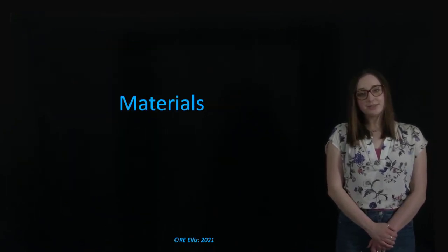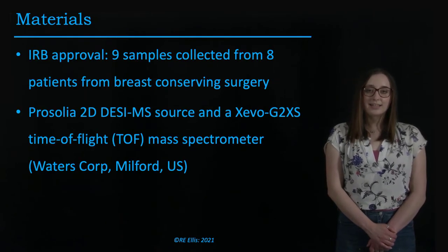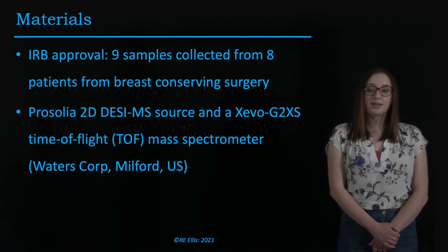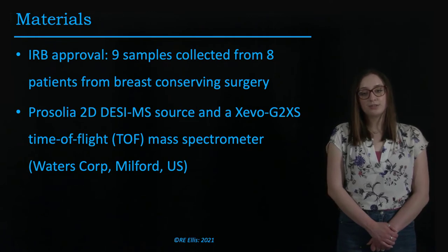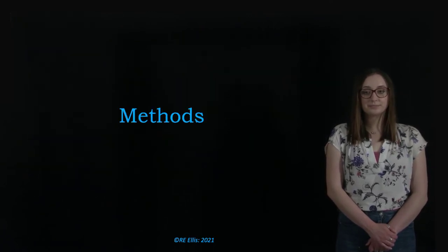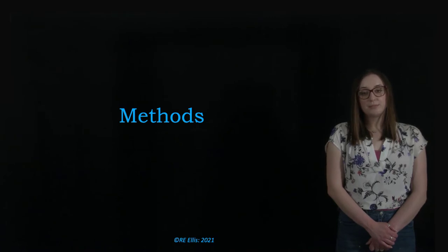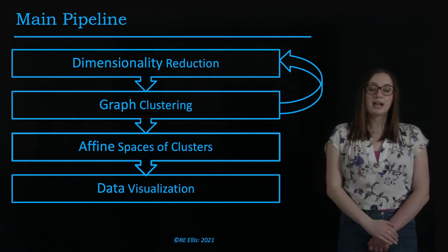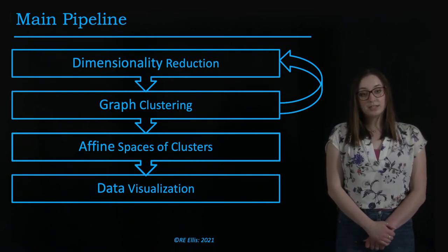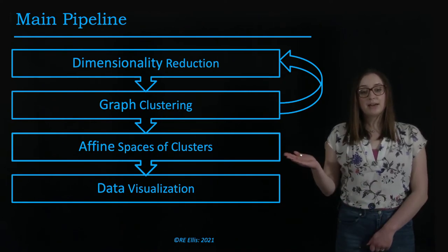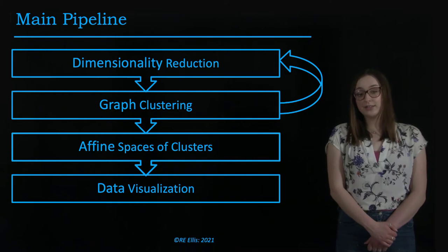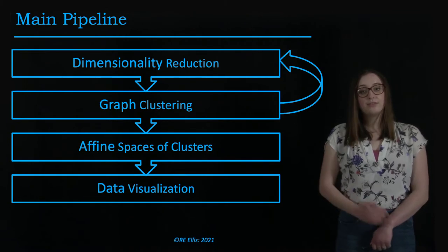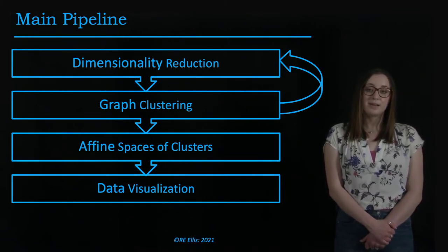We had access to nine tissue samples collected during a breast conserving surgery that were flash frozen and processed using the Priscilla 2D DESI mass spectrometry source and a time-of-flight mass spectrometer. The methodology will be multi-part. We will walk through a pipeline beginning with multiple stages of dimensionality reduction and graph clustering to ultimately achieve foreground clustering. Then we will use affine spaces of clusters to produce a single cancer and benign metabolic space representative of the clusters from across the samples. Finally, we will visualize the data using a multivariate methodology.